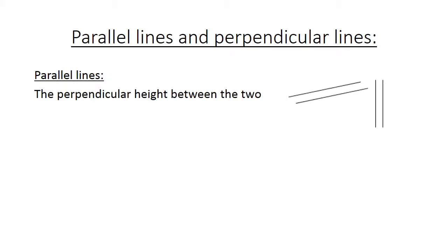Parallel lines and perpendicular lines. Parallel lines: The perpendicular height between the two lines are identical wherever it's measured. Now look at the blue arrow there.